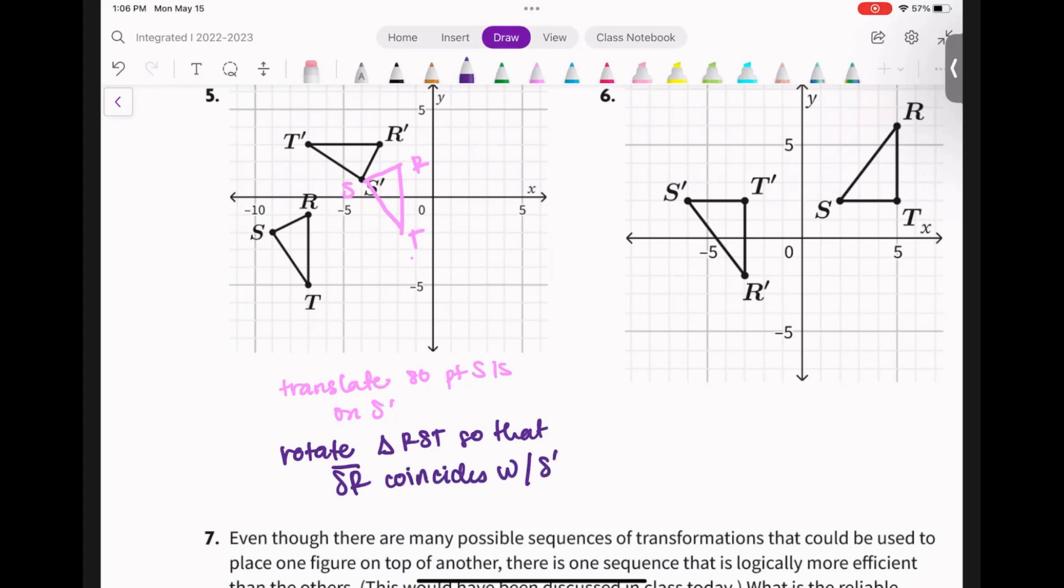And if you notice, I put little hats on them because that's what I do. Now, I can't rotate my figures on OneNote, so I'm going to draw my figure out if that makes sense. So I'm going to rotate STR so that it is sitting now on top of RS. Does that make sense? So now this right here is R and S.